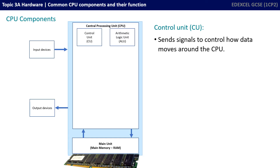Another important component is the control unit. You can think of this as the command and control centre of the CPU. It sends signals to control how data moves around the CPU and coordinates the CPU's operations.